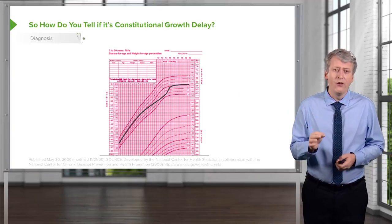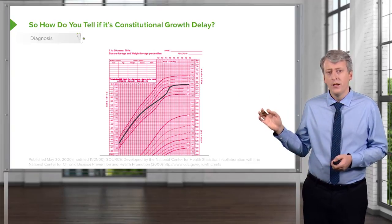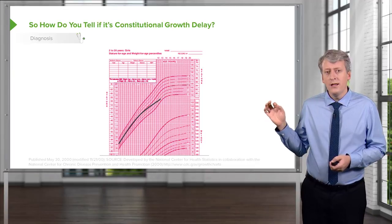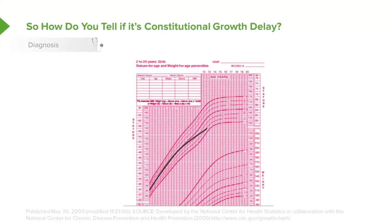But what if this child didn't come in earlier, but came to see you now? This is the same child — they're going to end up at the correct height. But the mom is coming in to see you because now this child at the age of about 13 is falling off her growth curve. Whereas previously compared to other kids she was about on target, now she seems to be shorter than a lot of the other children. And the mom's worried: why is my daughter not growing well?